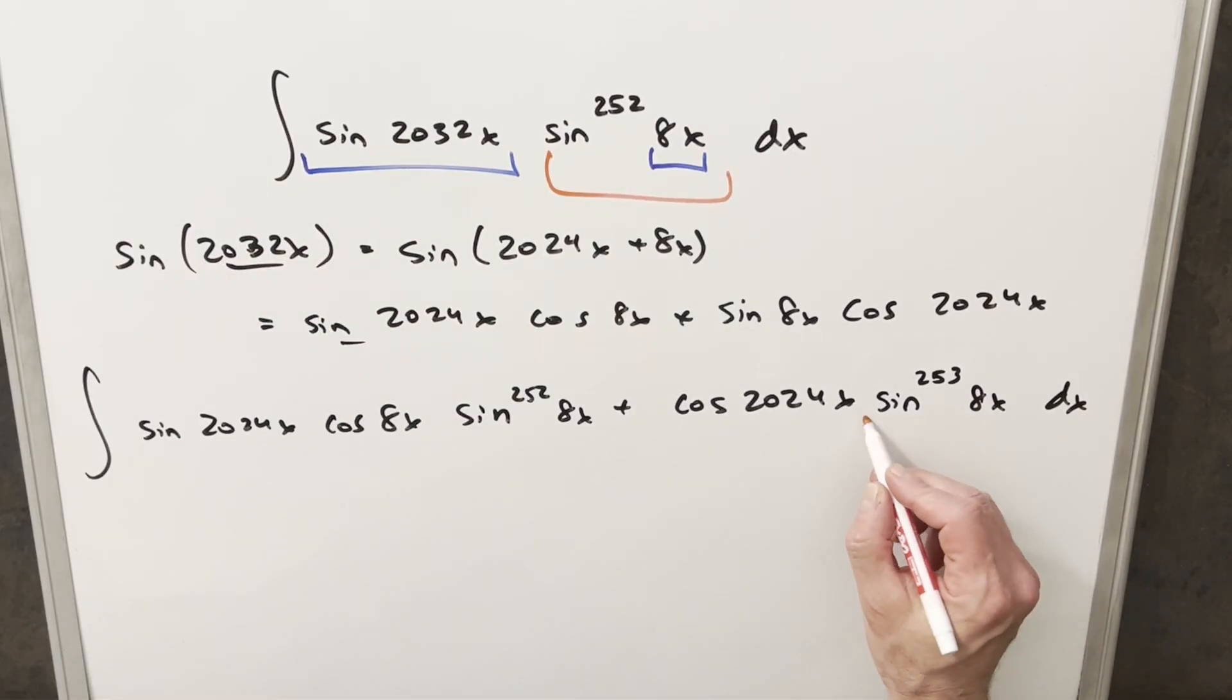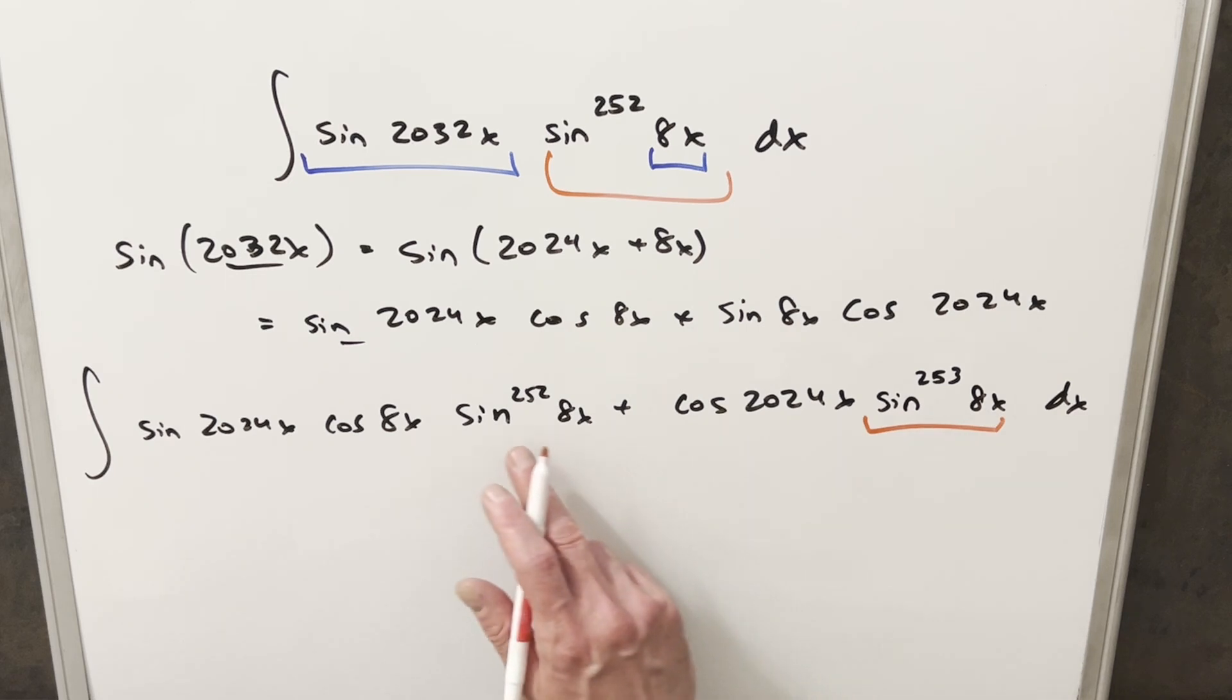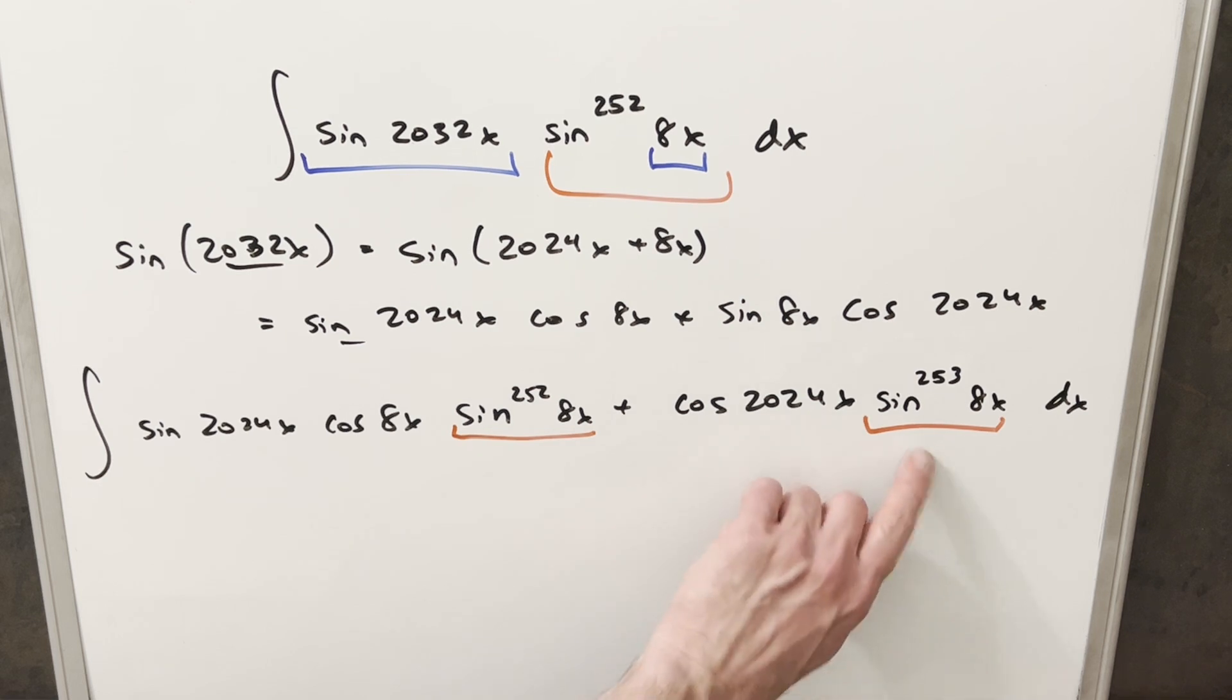Then now at this point, what I notice is this term right here, if I take a derivative of this, I'm going to end up with something, I'm going to end up with this term in it somehow. So that's a clue that what I want to do is find the derivative of this.